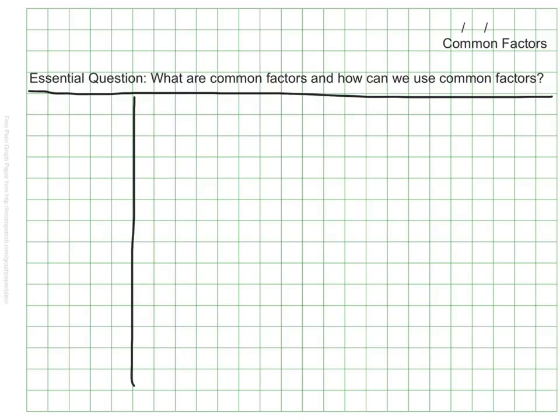First, let's remember what we mean by factor. As we've seen before, factors are whole numbers that are multiplied to get a product. As an example, let's look at the number 14. So 14 has four factors.